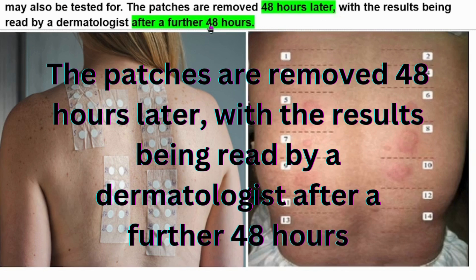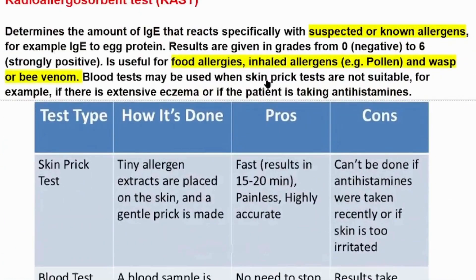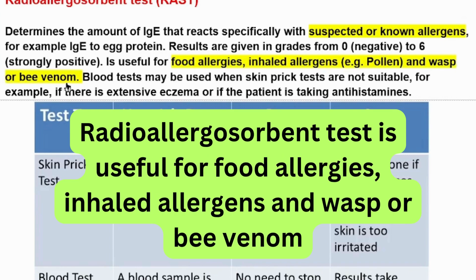The radioallergosorbent test (RAST) determines the amount of immunoglobulin E that reacts specifically with suspected or known allergens — for example, immunoglobulin E to egg protein. Results are given in grades from 0 (negative) to 6 (strongly positive). RAST is useful for food allergies, inhaled allergens such as pollen, and wasp or bee venom. It can be used instead of skin prick testing.